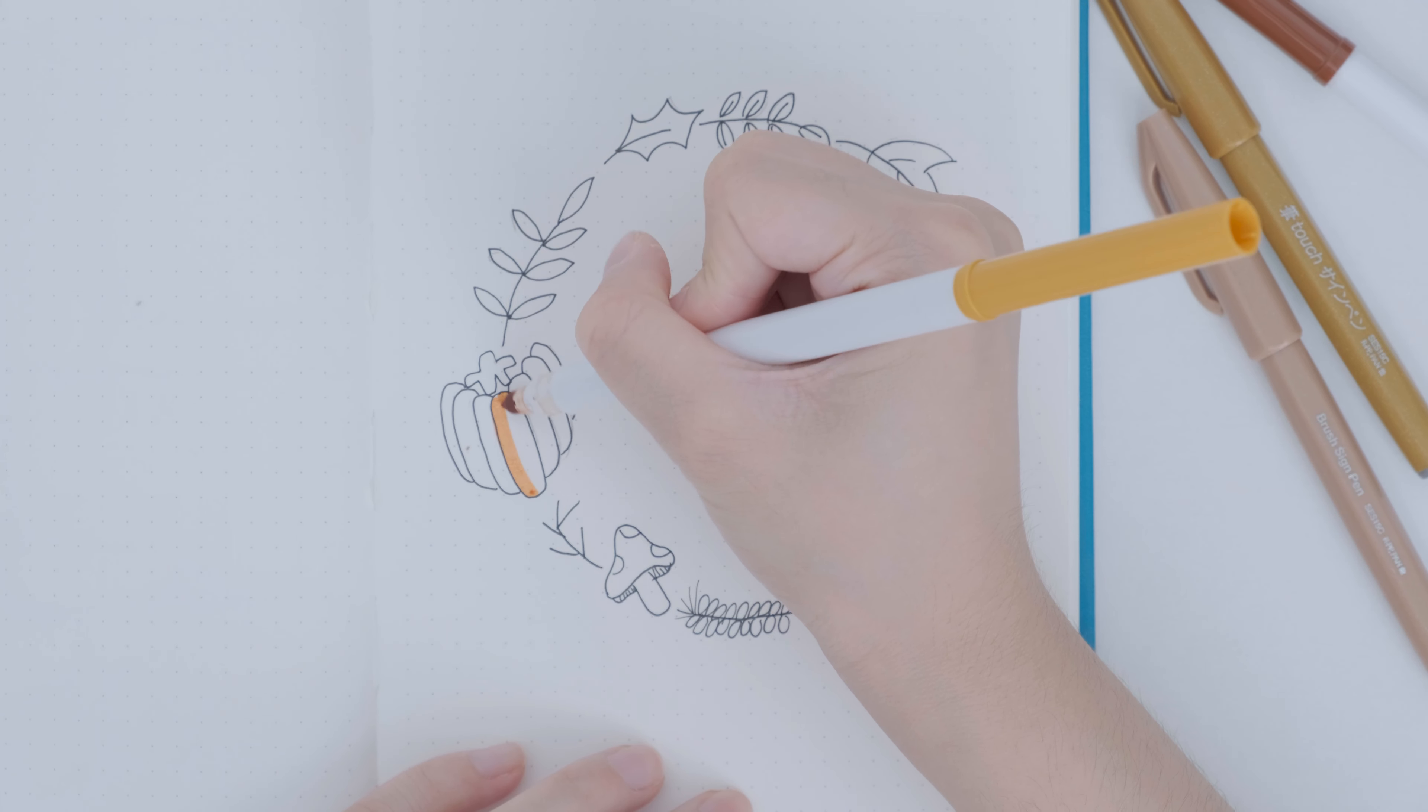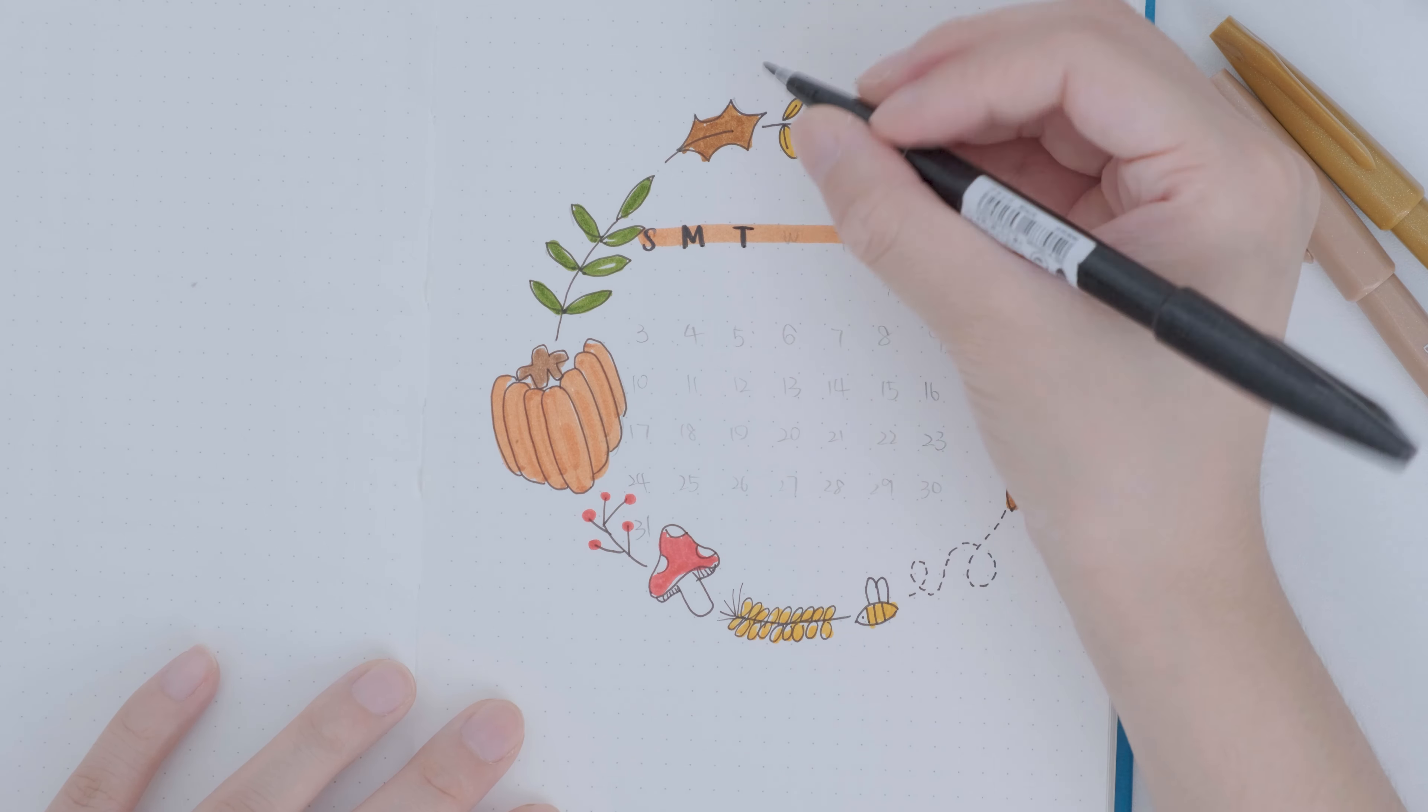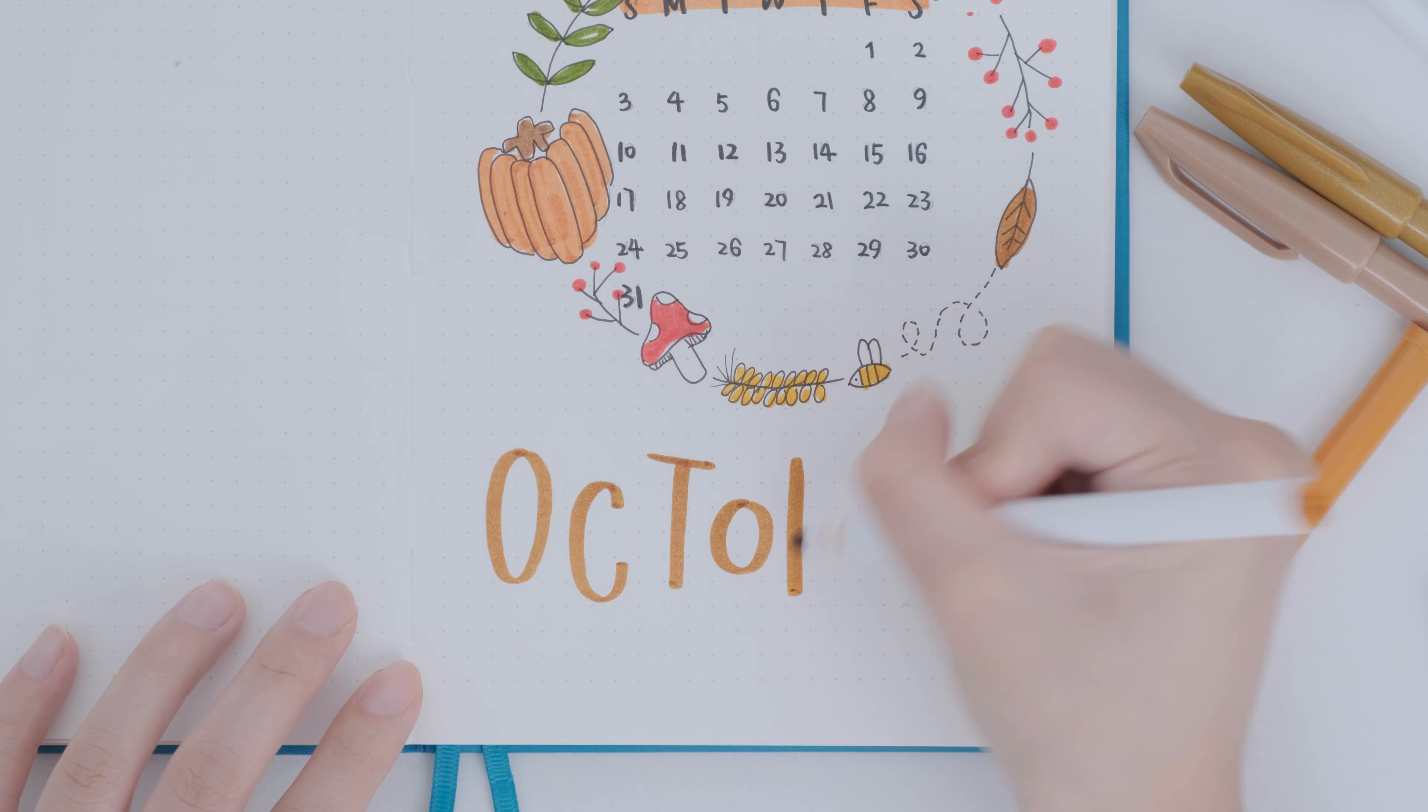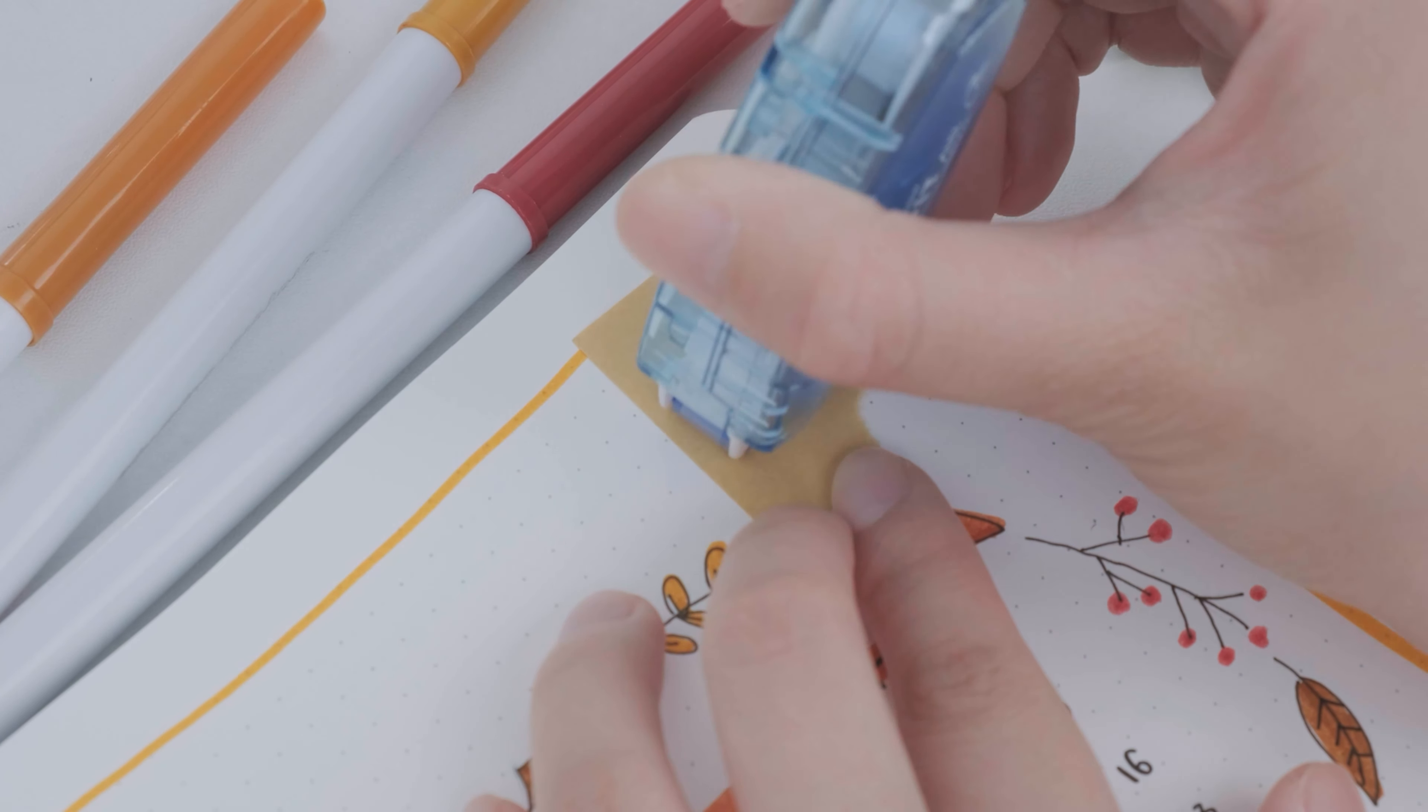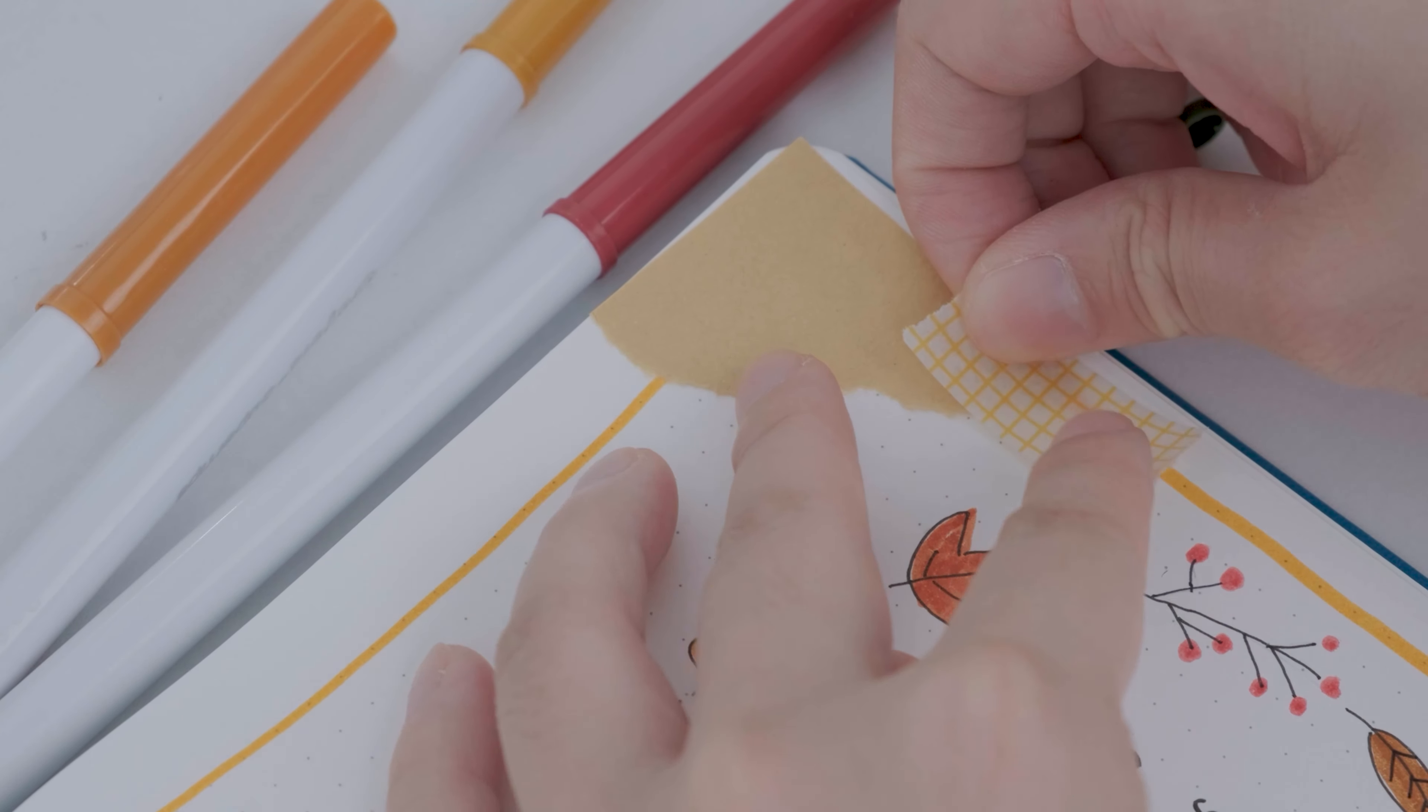And then I used the Crayola Super Tips markers and colored them. I went for colors like brown, orange, dark green, and other colors that I think match autumn. I added the October calendar in the middle of the wreath, so that I can also get an idea of the date when I flip through my journal. I also tore off a part of the craft paper for decoration. Simply use the glue tape on the back and stick it on.